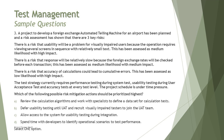Option A: review the calculation algorithms and work with specialists to define a data set for the calculation test — let's keep this on hold, seems to be good. Option B: defer usability testing until UAT and recruit visually impaired testers to join the UAT team — that's not a professional approach; you would have a UAT team in your organization. Option C: allow access to the system for usability testing during integration. Given medium likelihood and high impact, we should not wait until UAT; rather, it should be pushed up to integration, since the highest severity risk is usability. So C seems absolutely fine.